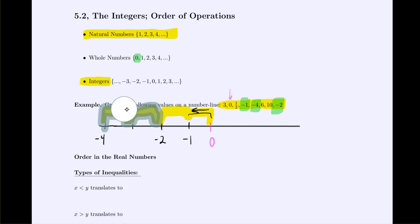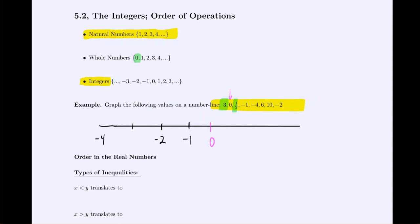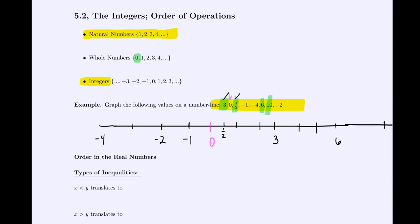We've plotted all values less than 0. Now for values greater than 0: we graph positive 3, positive 1½, 6, and 10. The value 1½ is between 0 and 1. Then 3 is 3 units from 0, 6 is 6 units from 0, and 10 is 10 units from 0. Values increase as we go to the right on the number line.